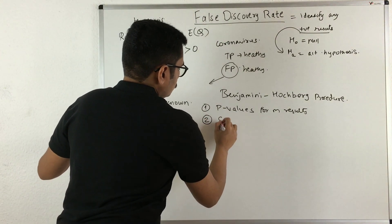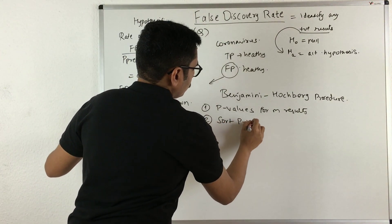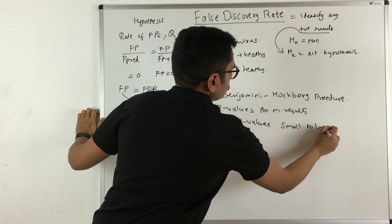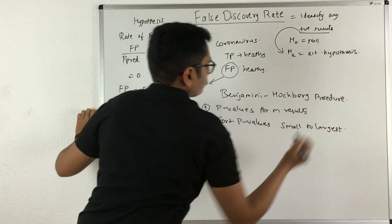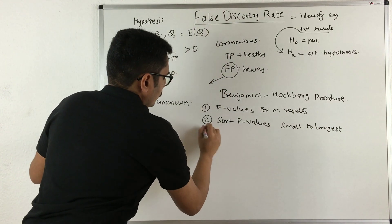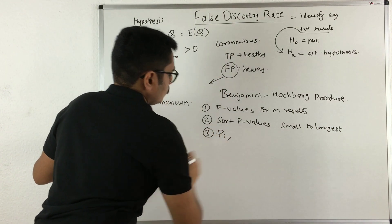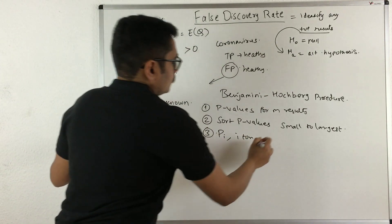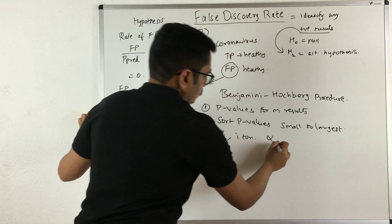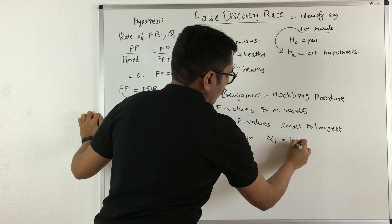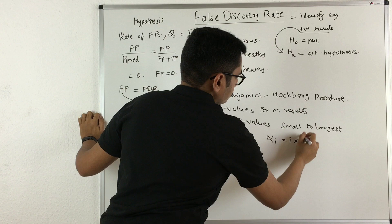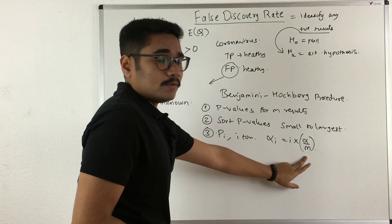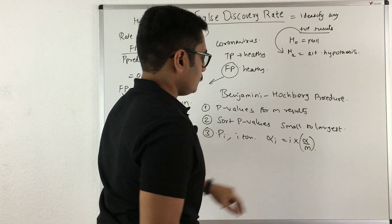Second, you sort the probability values from smallest to largest. Next, for each probability value P_i with i ranging from 1 to N, you calculate the level of significance as alpha_i equals i times alpha upon M. This quantity is familiar from the Bonferroni correction.